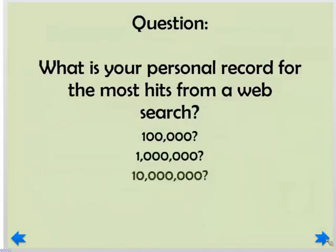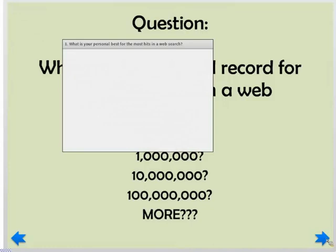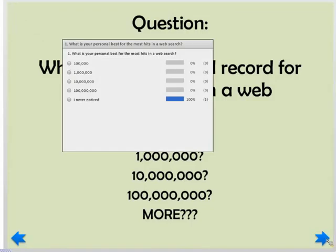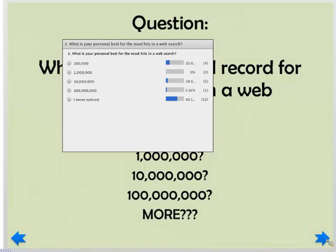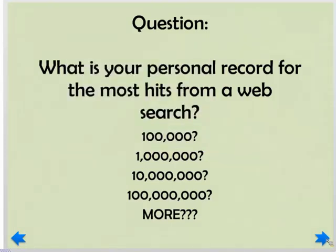Here's a question via our first poll: what's your personal best when you've done a web search? Has anybody gotten 100,000 hits, a million, 10 million, 100 million, or more? It looks like 'never noticed' is coming out on top tonight. Many people don't take note of how many hits they get. Major search engines like Google and Bing give you an estimate near the top of the page, and you'd be surprised how many results a single search returns.